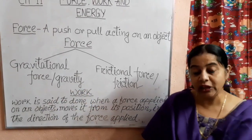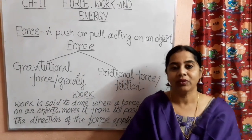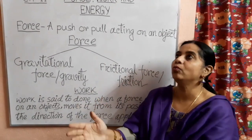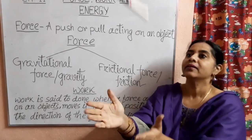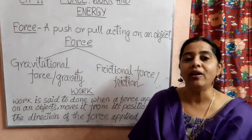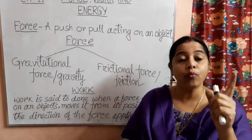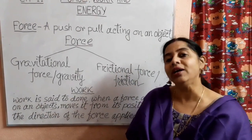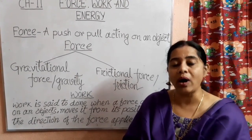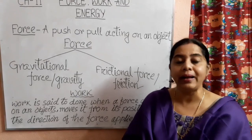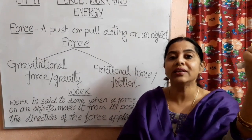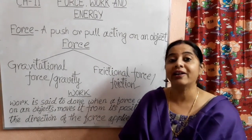Students, if you throw something — suppose I am throwing this pen — it comes down to the floor. When you play with a ball and you throw the ball upward, it comes down to the ground. Fruits like mangoes, guava, or apple, when they ripen, they do not go upward toward the sky — they come down to the ground.